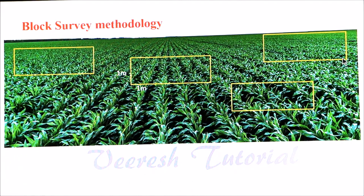Either in a roving survey or in a fixed plot survey, the sampling of the pest population depends upon the type of damage they are going to cause and also upon what you are looking for — either the absolute count of the pest or the damaged plant parts. There are two types of sampling methods: one is block survey methodology and the second one is point survey methodology.